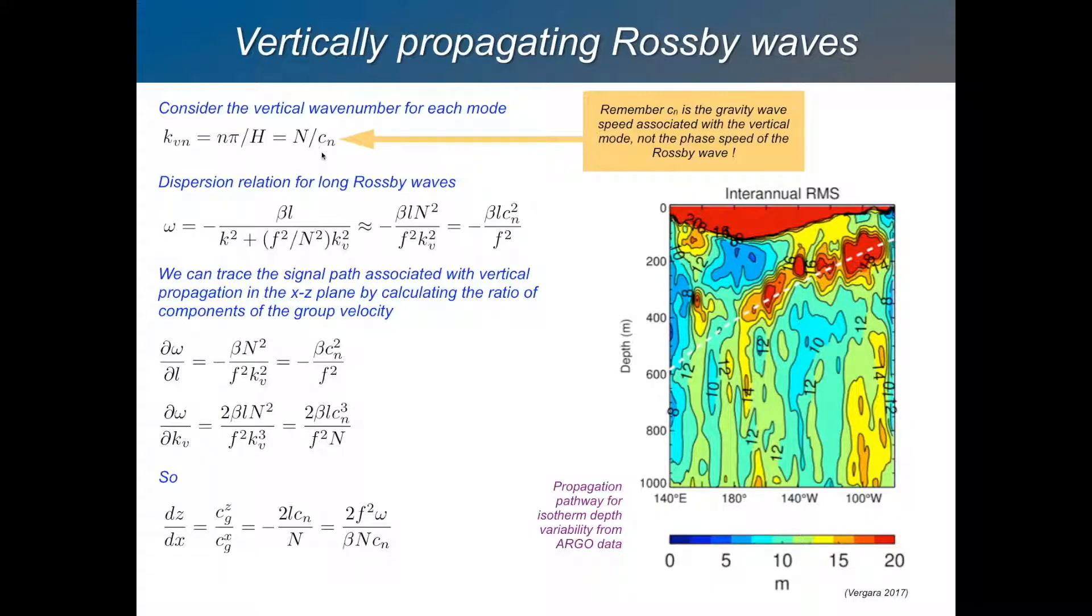C is the gravity wave phase speed for the mode in question. And here's the dispersion relation. Omega, again, omega is beta L over K squared, which is the horizontal wave number, plus KV squared times this coefficient. And let's assume that we're talking about very long waves, horizontal waves which are very long. So this K squared is small compared to this term here. And you can approximate this like this, which you can write like this.